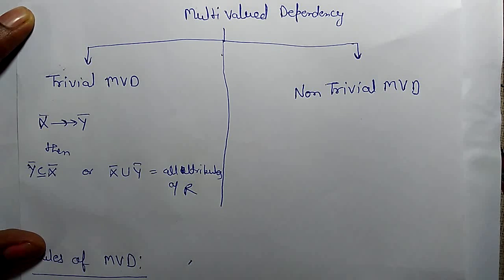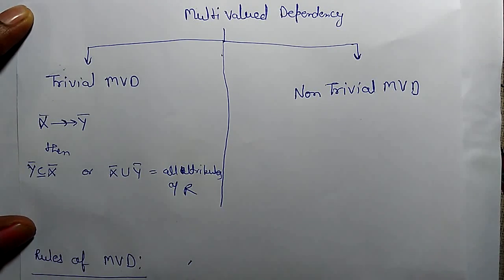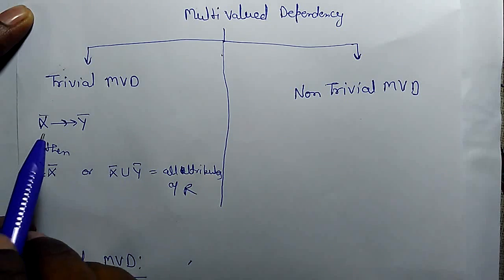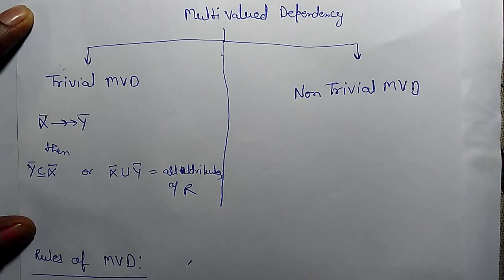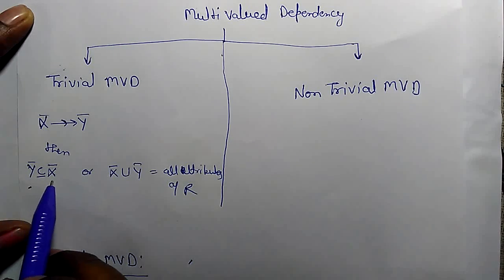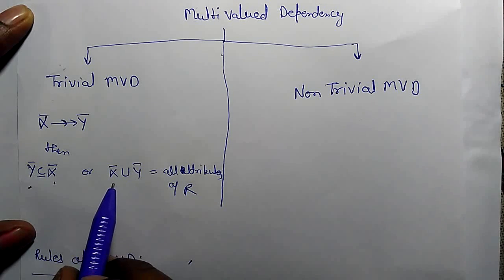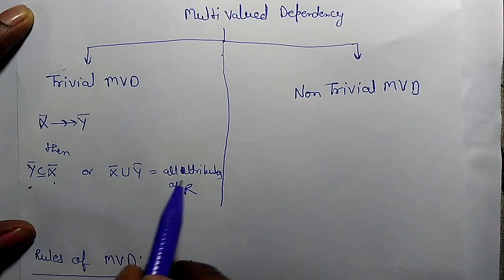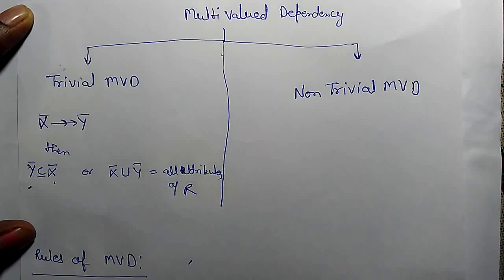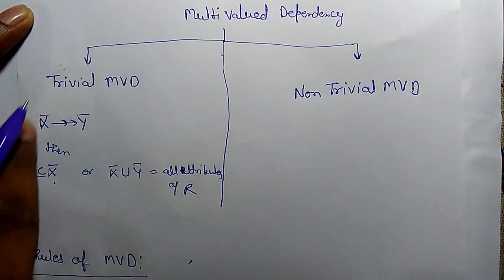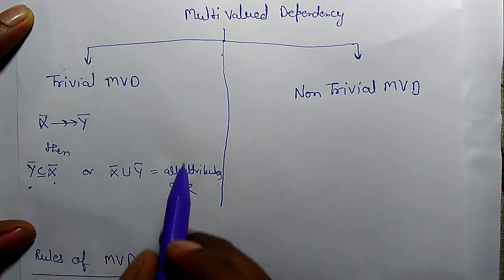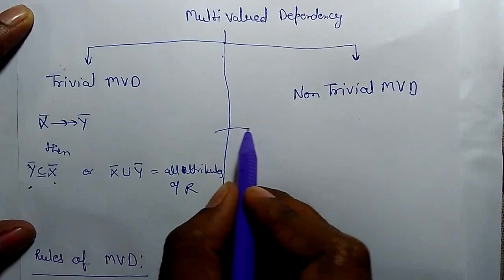Today we are going to learn the rules of multivalue dependency. Multivalue dependency could be trivial or non-trivial. If Y is multivalue dependent on X, then if Y is a subset of X, or the attributes of X and Y union equals all the attributes of relation R, then this multivalue dependency is trivial. If this condition does not hold, then it is non-trivial.